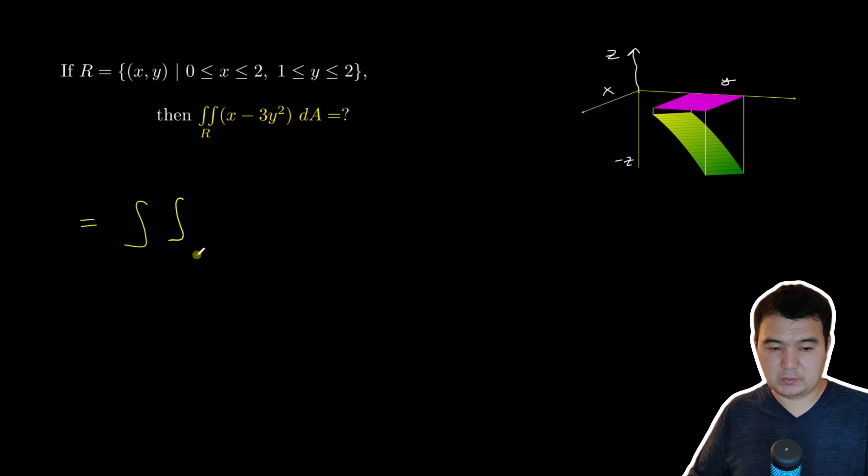So we can do the other way also. So which means I will write it as x minus 3y squared, first with respect to x and then y. So the limits with respect to x is from 0 to 2, and the limits with respect to y is from 1 to 2.